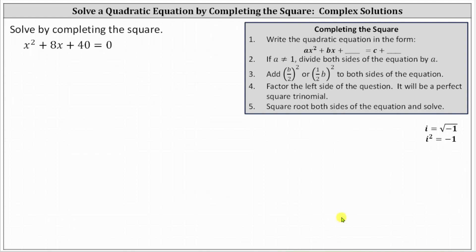Look at the notes on the right. The first step is to write the quadratic equation in the form shown here, which means we subtract 40 on both sides and then leave room for the constant we'll add to both sides of the equation. Subtracting 40 on both sides, let's write the equation as x squared plus 8x plus a constant we'll find in a minute, equals negative 40 plus the same constant we will add to the left.